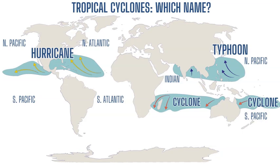Then you have the typhoons. These form in the western Pacific, in the northern Pacific, and also around the Indian Ocean and the Indian subcontinent. These are called typhoons, moving towards countries like the Philippines, China, Japan, and also India.